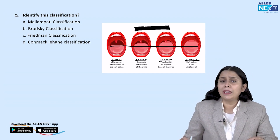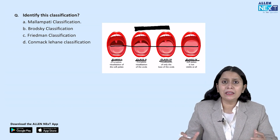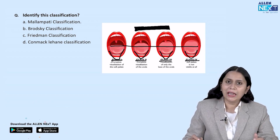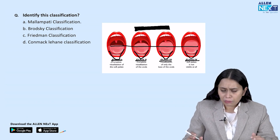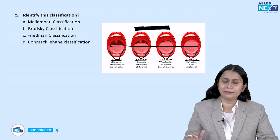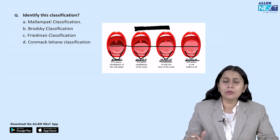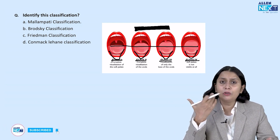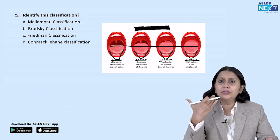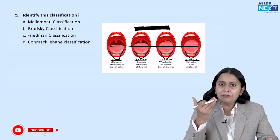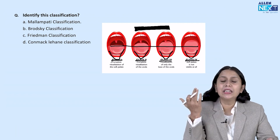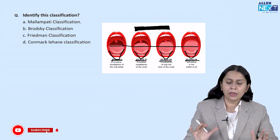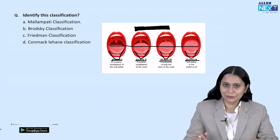But I told you how we assess Malampati: we ask the patient to open his mouth and take the tongue out — the tongue has to protrude out of the oral cavity, and then we see the structures. If the lower teeth of the lower jaw are not visible, the tongue is out. If the teeth are visible, the tongue is in. If tongue is out, it is Malampati classification. But if tongue is in, then it is not Malampati.